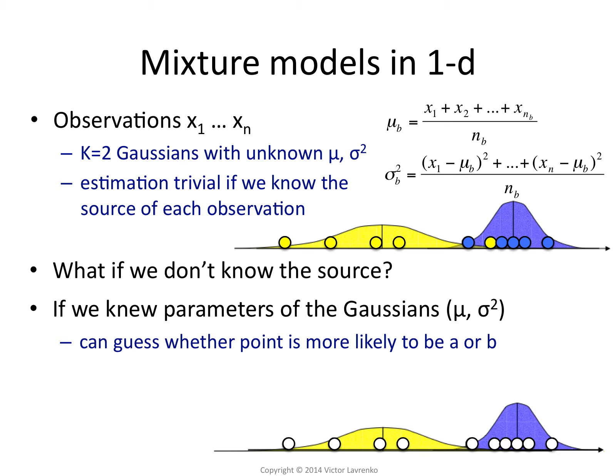if you knew that the Gaussians looked like that, you could take a pretty good step at assigning the colors. You would say, well, these points are probably blue and these points are probably yellow. And the way you would do that is for each point, you would compute the posterior probability that it is blue. So what you would do first is you would, for each data point...